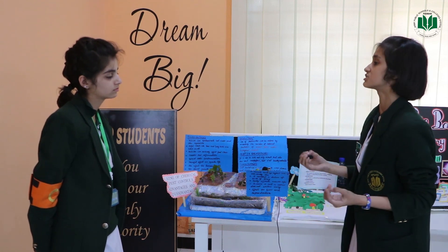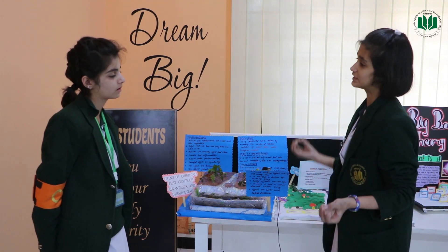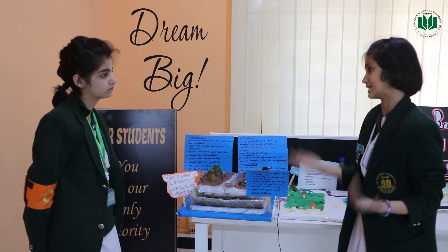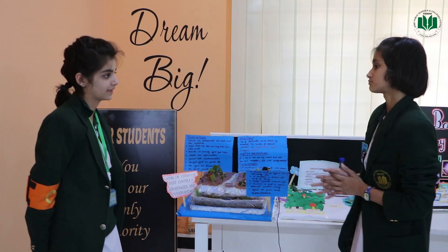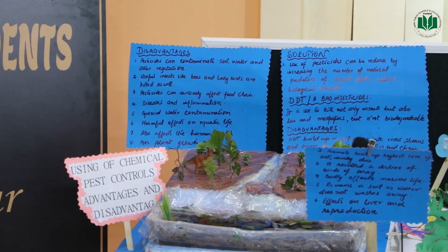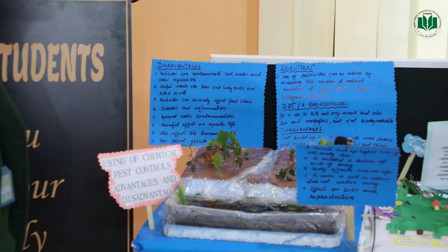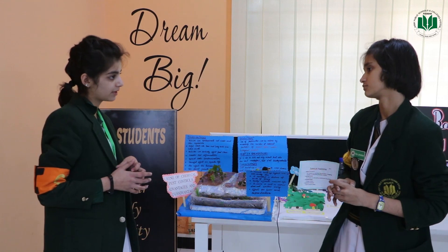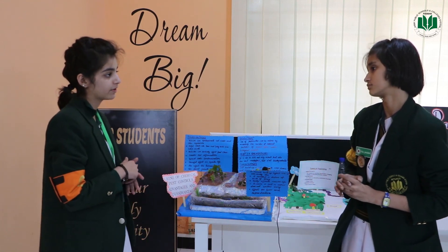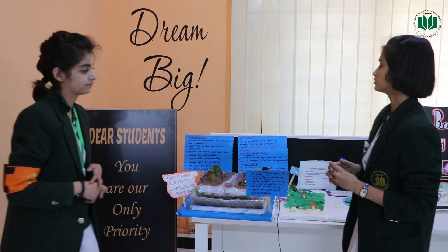DDT builds up in the fatty layers of animals, and large amounts of DDT in the fatty layers of animals can cause their death. Also, unlike regular insecticides which only kill insects harming the crops, DDT not only does that but also kills other organisms harmful to humans, for example lice or mosquitoes.